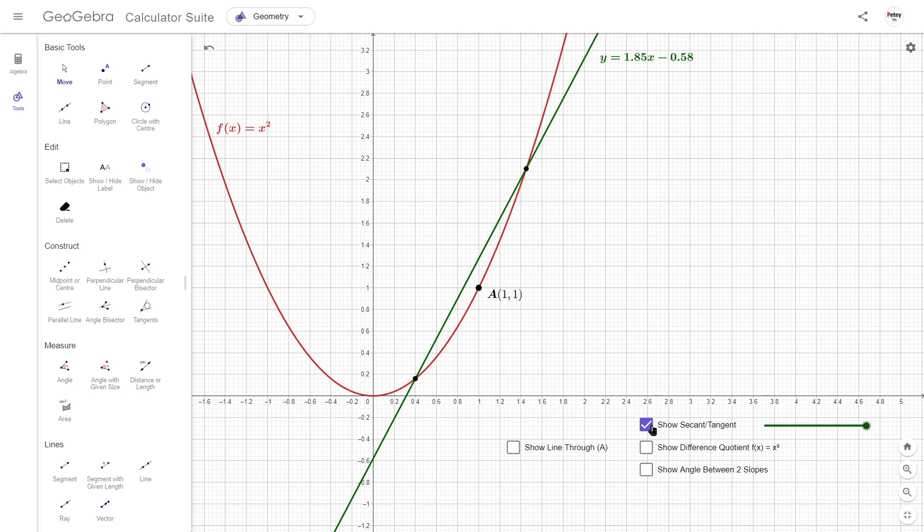If we want to find the gradient of the secant, then we can use rise over run to work it out.